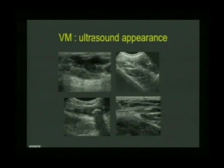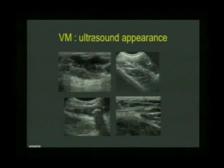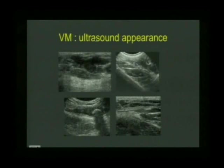On ultrasound, lesions may have some more solid structure. You can see the septa and phleboliths. Here's a venous malformation with a calcified blood clot and an acoustic shadow. Interestingly, here's a venous malformation near the ankle — it is engulfing and surrounding tendons. We also see them surrounding and engulfing arteries as well.